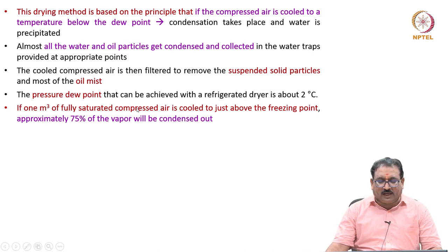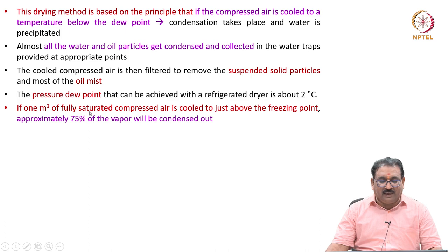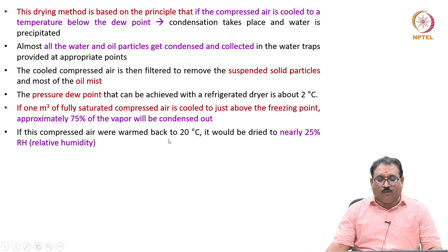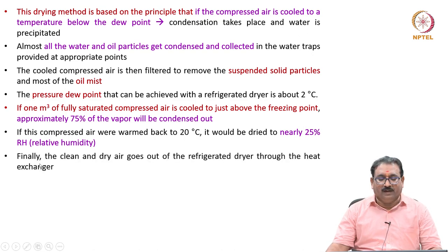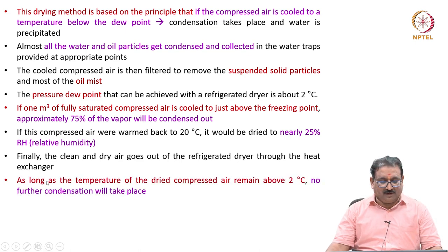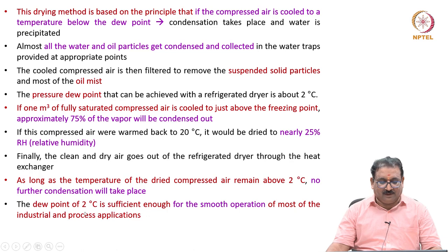If 1 m³ of fully saturated compressed air is cooled to just above the freezing point, approximately 75 percent of the vapor will be condensed out. If this compressed air were warmed back to 20 degrees centigrade, it would be dried to nearly 25 percent relative humidity. Finally, the clean and dry air goes out of the refrigerated dryer through the heat exchanger. As long as the temperature of the compressed air remains above 2 degrees centigrade, no further condensation takes place. The dew point of 2 degrees centigrade is sufficient for smooth operation of most industrial and process applications.